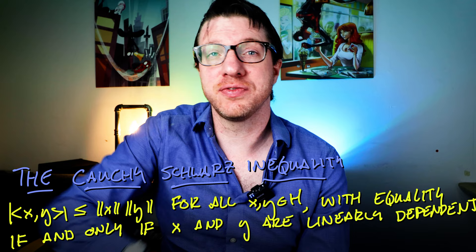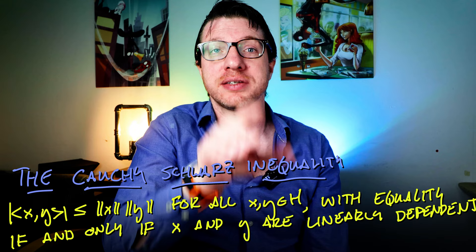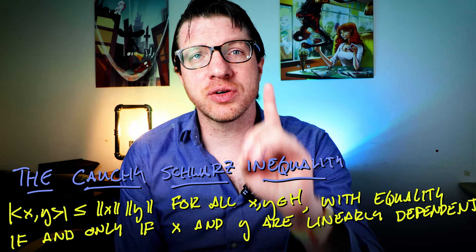The Cauchy-Schwarz inequality is stated as follows. The absolute value of the inner product between two vectors, x and y, is bounded by the product of the norms of x and y for all x and y in our space. And there is agreement if and only if x and y are proportional to each other.